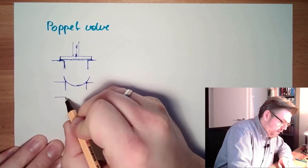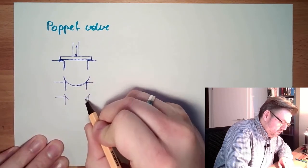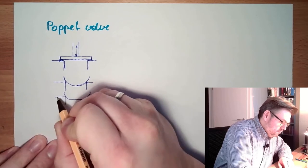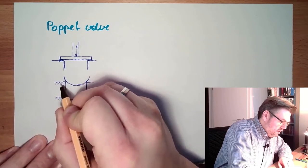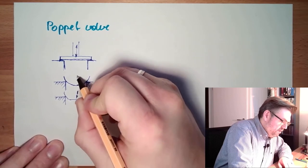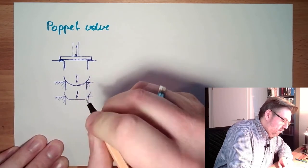Ball shaped, ball valves. Or there might be something like this, a cone. So these are poppet valves where we really have to lift them off the hole.